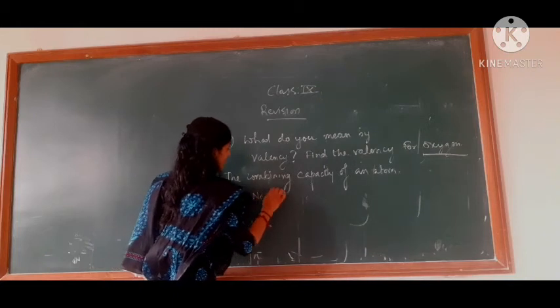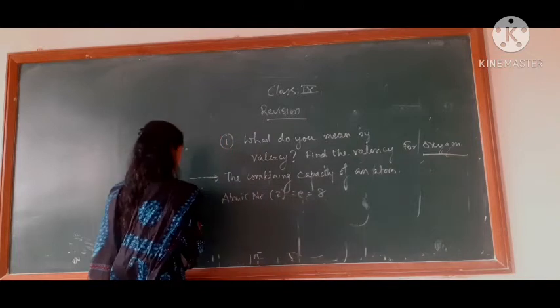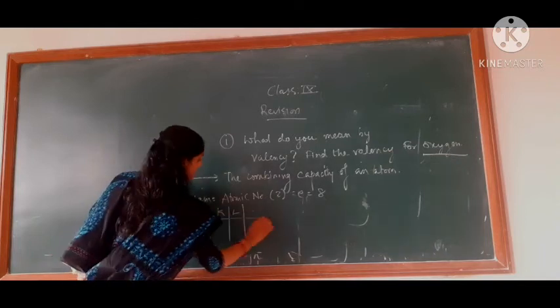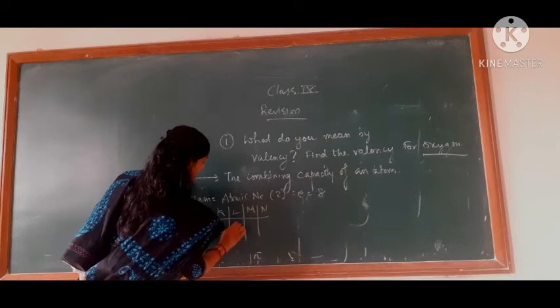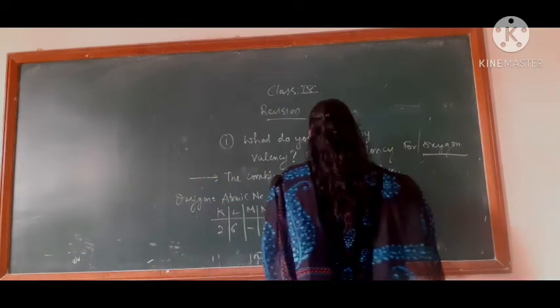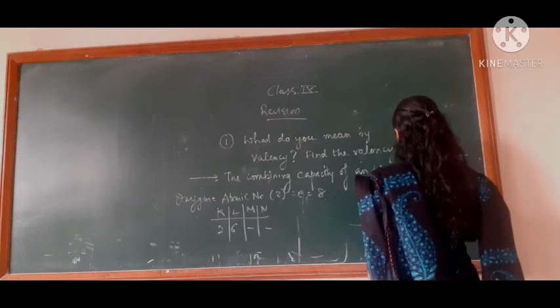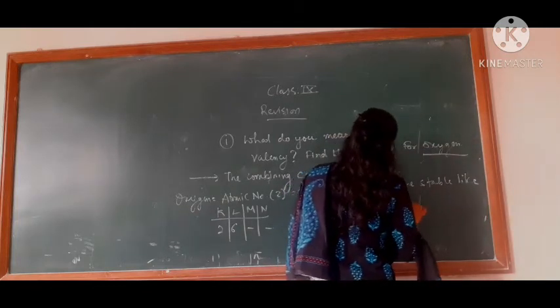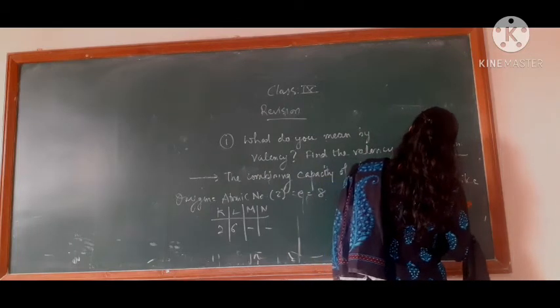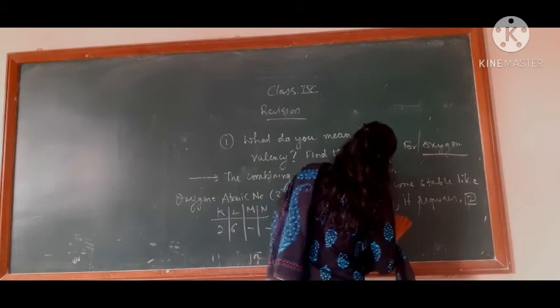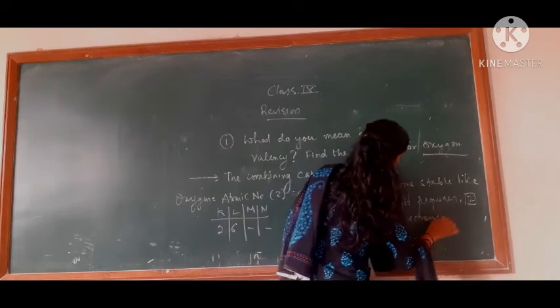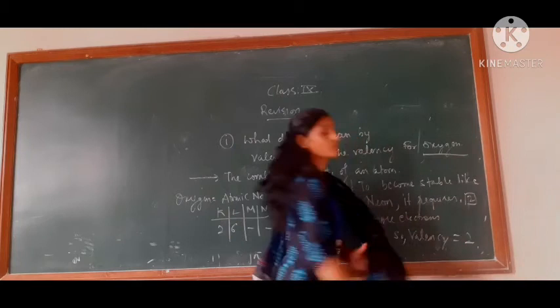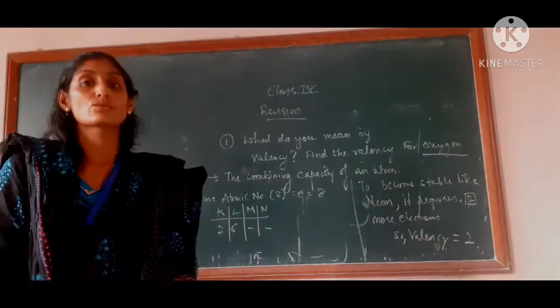Now we are going to find the valency for oxygen. What we are writing is atomic number Z is equal to 8 for oxygen. So here the electronic configuration is 2,6. That means to make it stable like neon, it requires 2 more electrons.